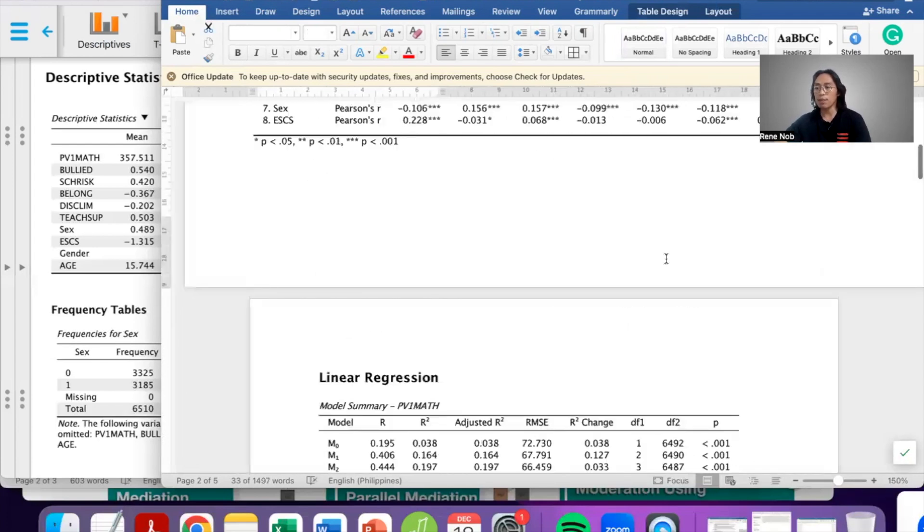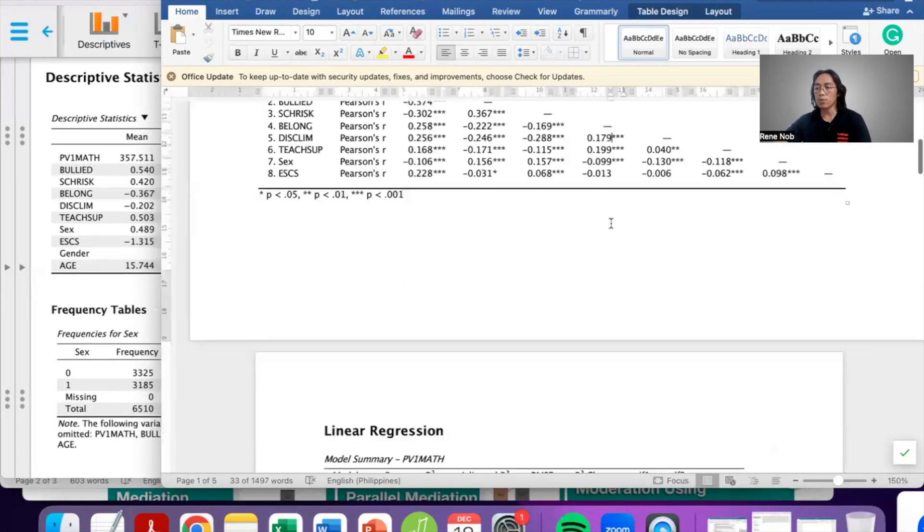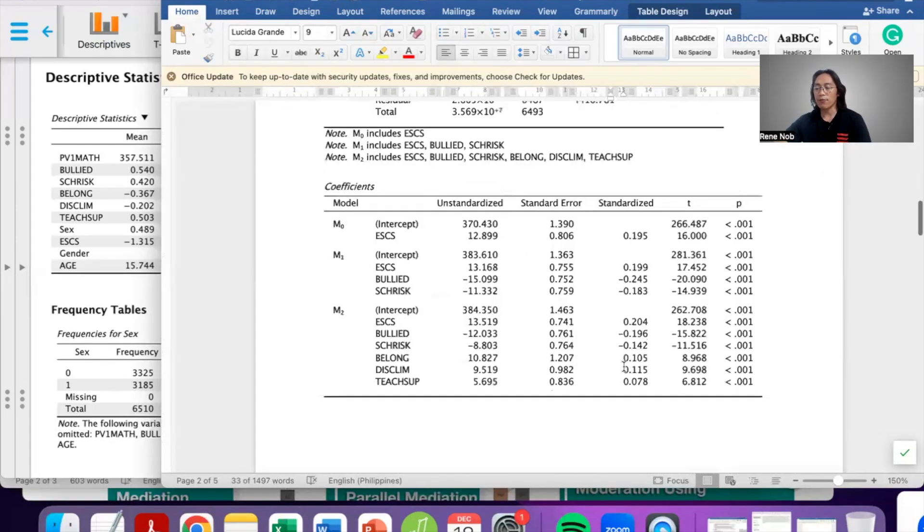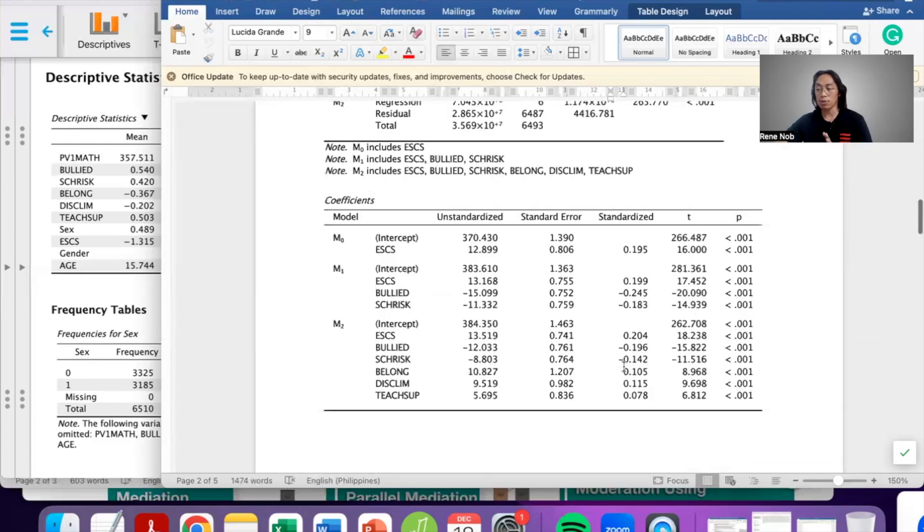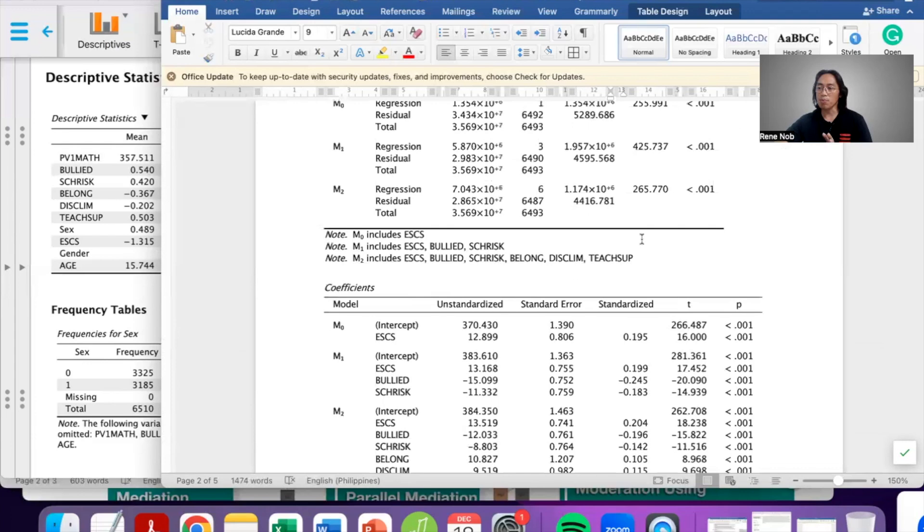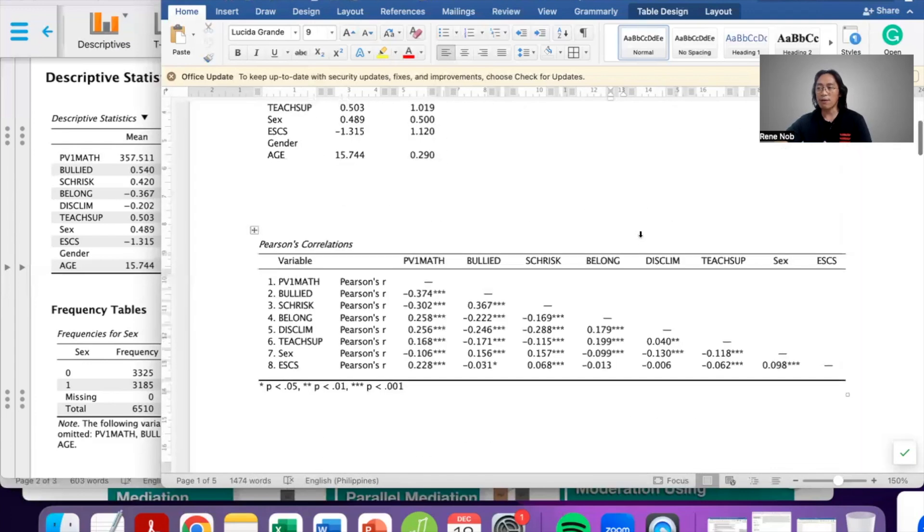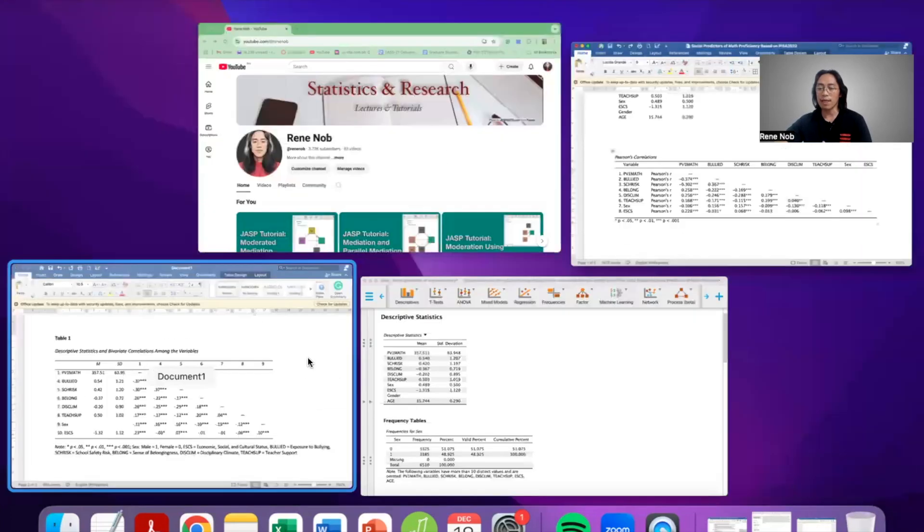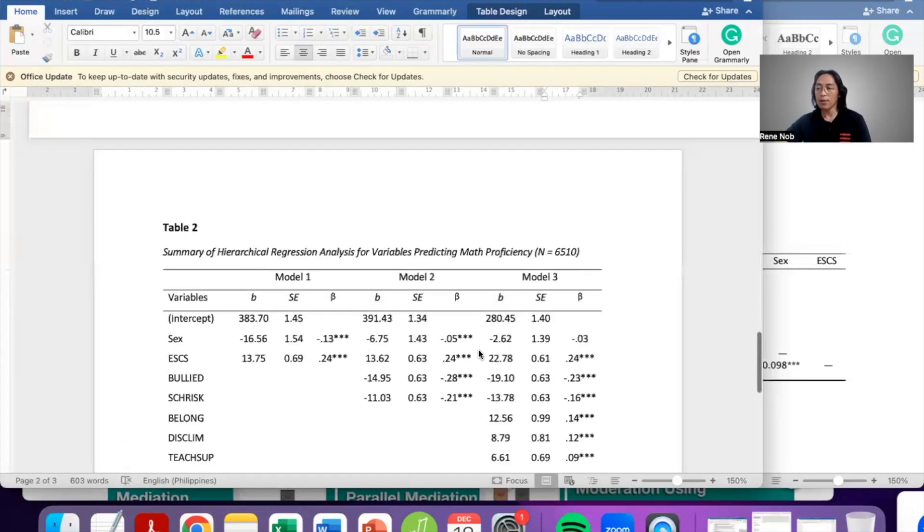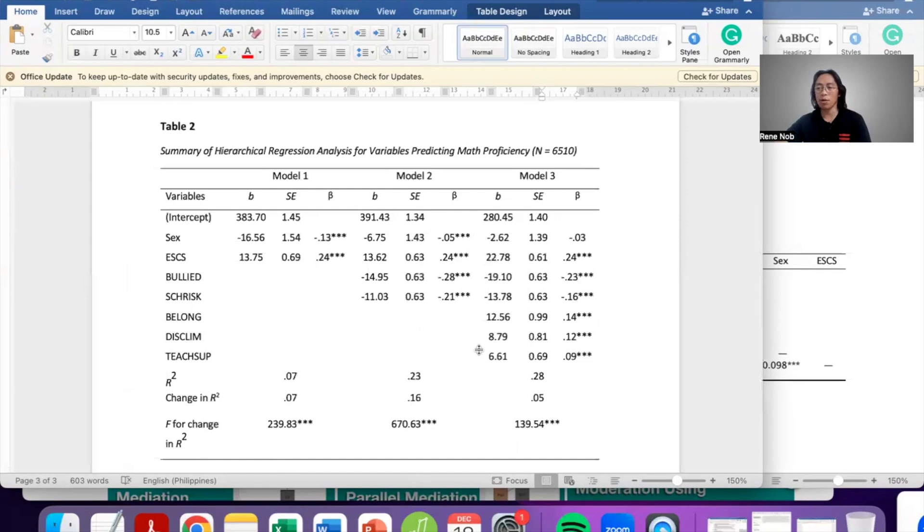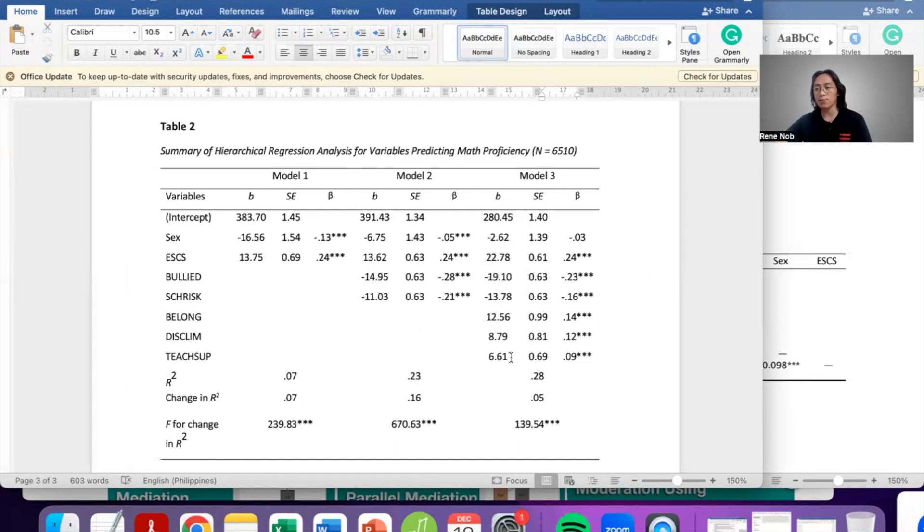How do we convert this into APA formatted tables? From here, you can see that we have multiple tables: 1, 2, 3, 4, 5. When in fact, I can simplify all of these things into two tables only. So our goal is to convert these results having five tables into something like this. In this table, we have combined both the descriptives and then the correlation coefficients. And then for the hierarchical regression, all of those models, we've summed it up into this simple table.